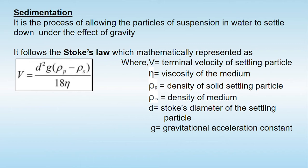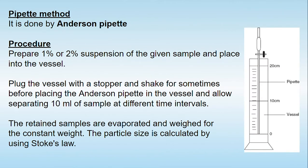The density difference between the solid settling particles and the medium — that is rho_p minus rho_s — is directly proportional to the terminal velocity. G is the gravitational acceleration constant. D is the diameter of the settling particle, and the terminal velocity of the particle is directly proportional to the square of the diameter.